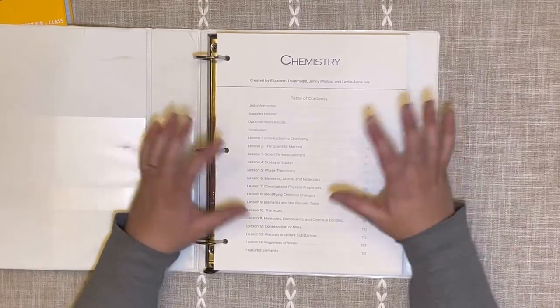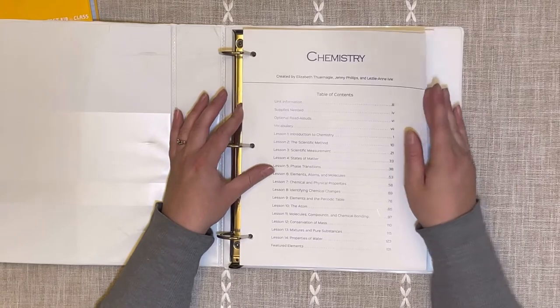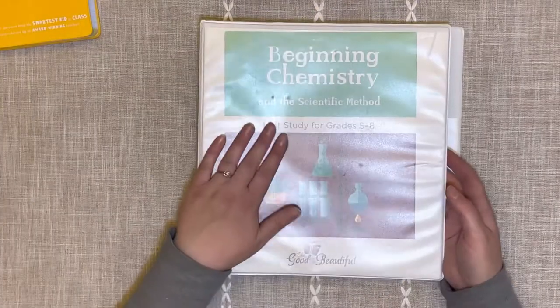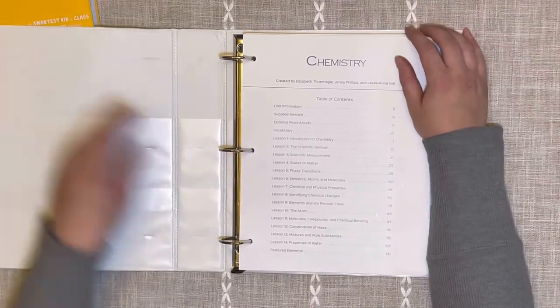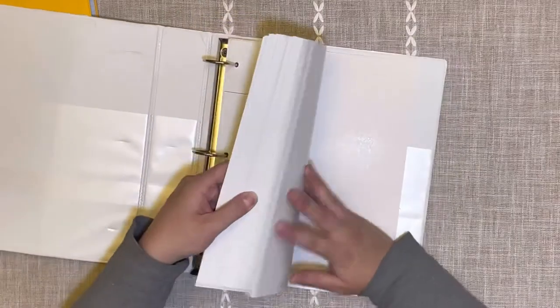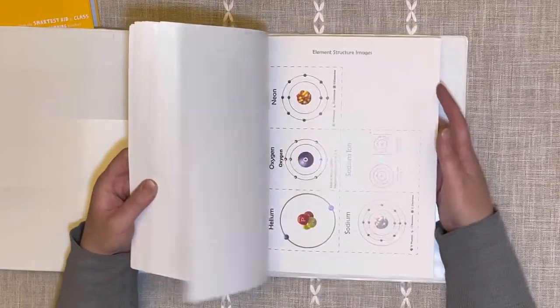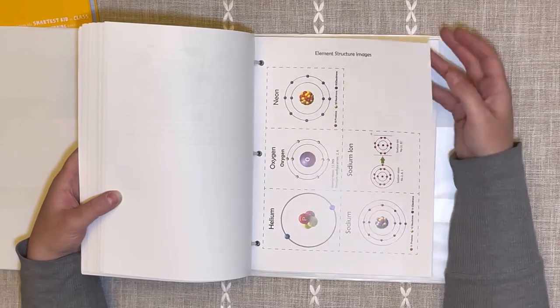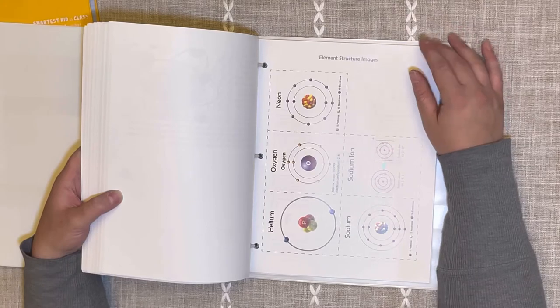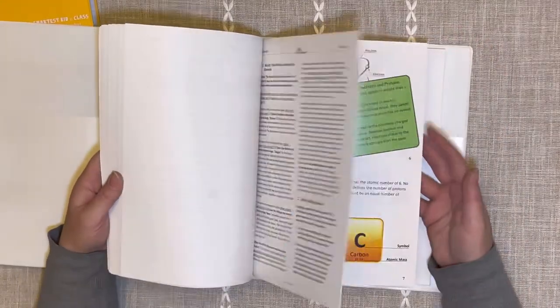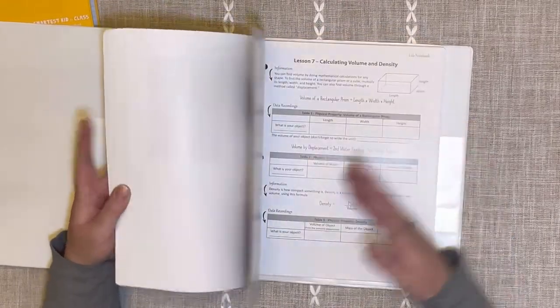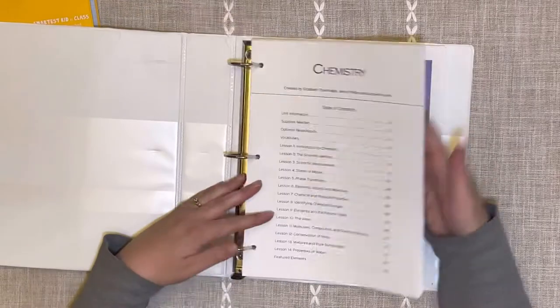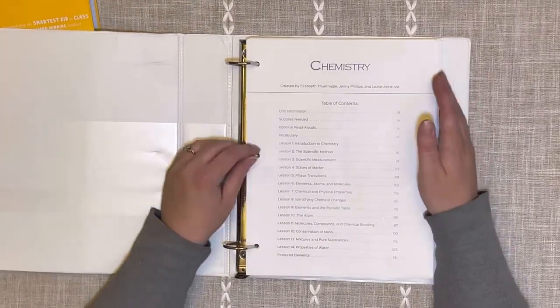When you order, you can either get the printed copy, and when you order the printed copy, you also will get a link for the PDF. Or you can just get the PDF and print it yourself at home. For me personally, I've done it both ways, but I have discovered that I really like their printed copies. Some of them come spiral bound and some of them come loose leaf. This came shrink wrapped and it was loose, so I three hole punched it myself and put it in a three ring binder.